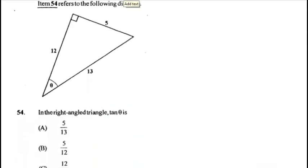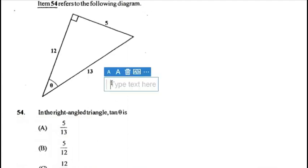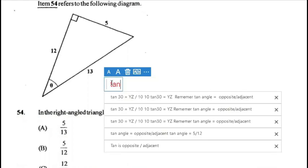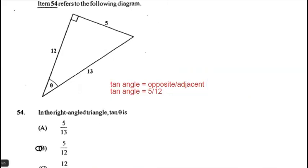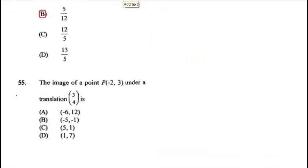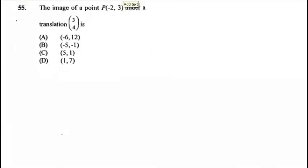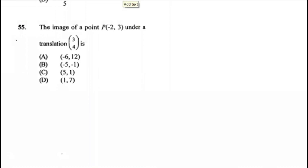Question 54: in the right-angle triangle, tan θ equals opposite over adjacent. The length opposite the angle is 5 and the adjacent length is 12, so tan θ = 5/12. Answer is B.